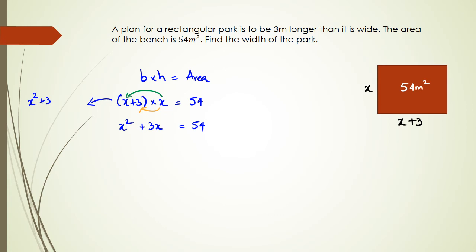When we rearrange this, we get x² + 3x - 54 = 0. We have a quadratic and we need to solve it. The first thing we need to do is factorize this quadratic. We're looking for two numbers that multiply to -54 and when you add them together equals positive 3.